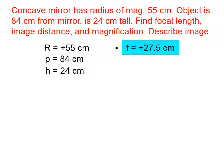So the focal length is half of the radius of curvature. So the focal length is going to be 27 and a half centimeters. We also want to know what the image distance q is and what the magnification is.